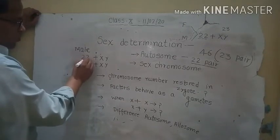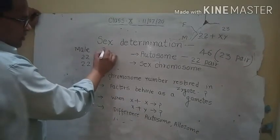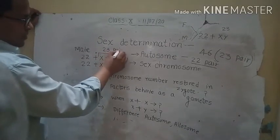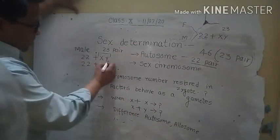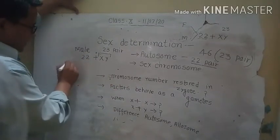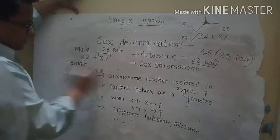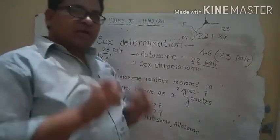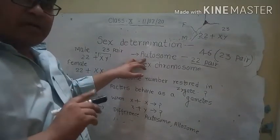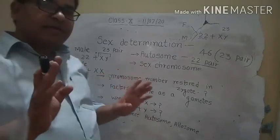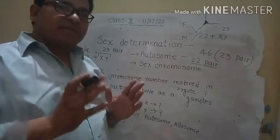So this condition will be 22 pairs — that is pairs 1 to 22 — and the 23rd pair is different in both male and female. If male, the 23rd pair is XY, and if female, the 23rd pair is XX. In a male body, remember, the 22 pairs are called autosomes — they will never play any role in sex determination and will not participate in determining the sex. That is why they are called autosomes, and they are present in each and every cell except the reproductive organs.